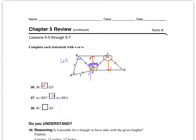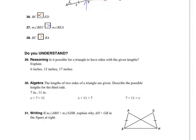The last part of this problem asks me to compare BC and BA. Since angle BEA is smaller than angle BEC, the side across from the smaller angle must be smaller. So BC is greater than BA — written in the order they have it on the page.